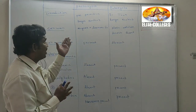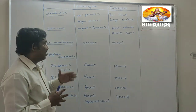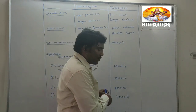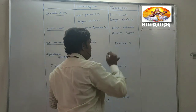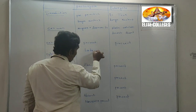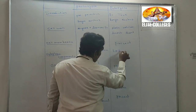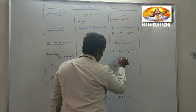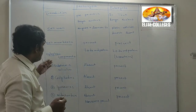Let us compare the cell membrane in prokaryotes with eukaryotes. The cell membrane is also called the plasma membrane or plasmalemma. Both prokaryotes and eukaryotes have a cell membrane, and both are made up of the same chemical composition — lipids and proteins, sometimes referred to as lipoproteins.